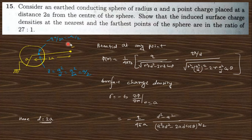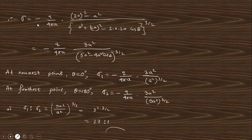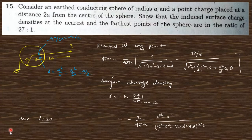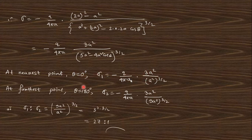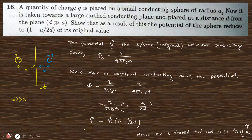Substituting d = 2a, the surface charge density expression is obtained. At the nearest point θ = 0, cos 0 = 1, giving one value. At the farthest point θ = 180°, cos 180° = -1, giving another value. Taking the ratio of the surface charge density at the nearest point to that at the farthest point gives 27:1.